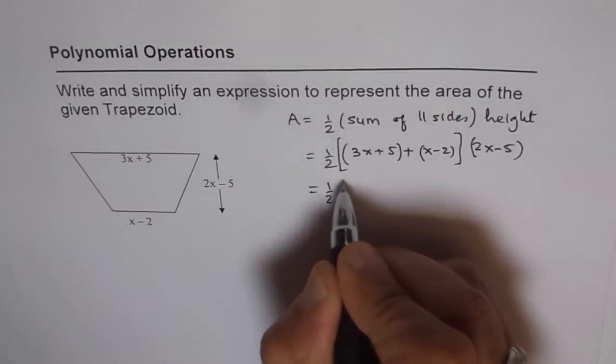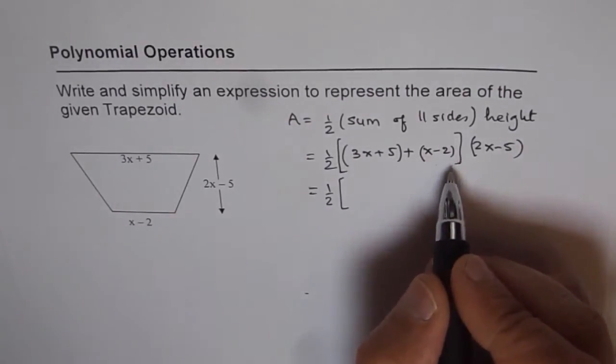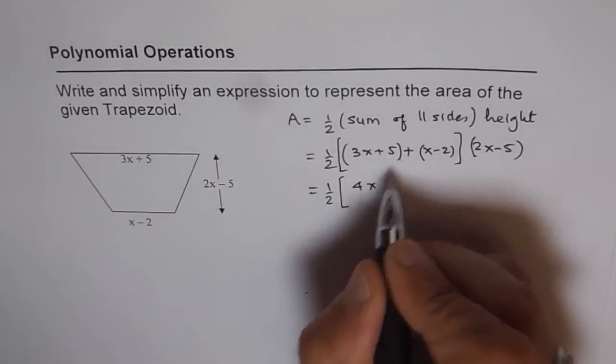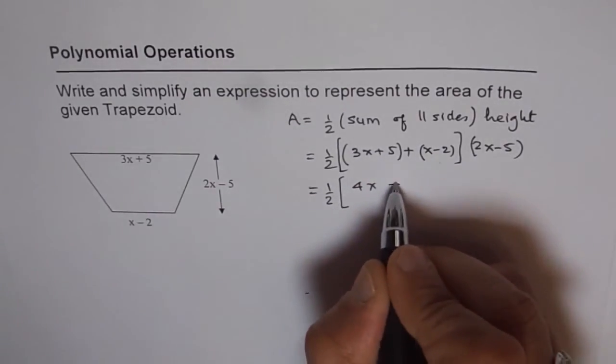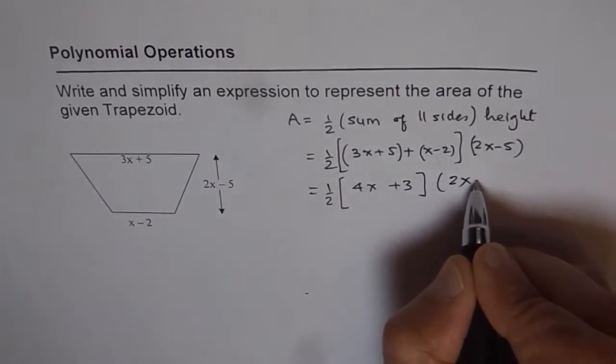Now, in such cases, let us first simplify inside this square bracket. 3x plus x is 4x, and plus 5 minus 2 is plus 3, times 2x minus 5.